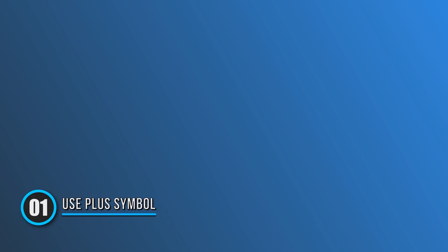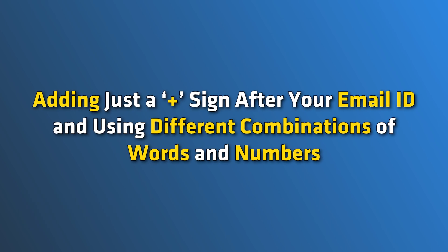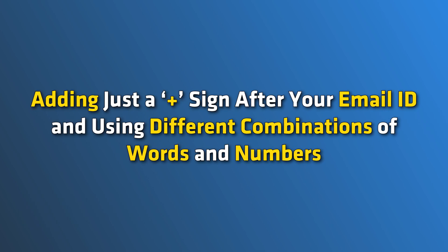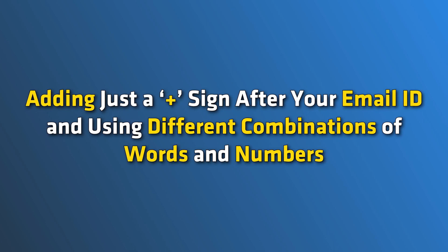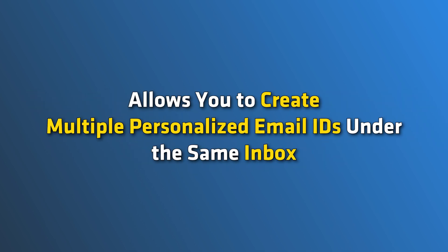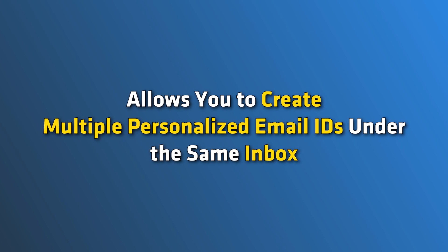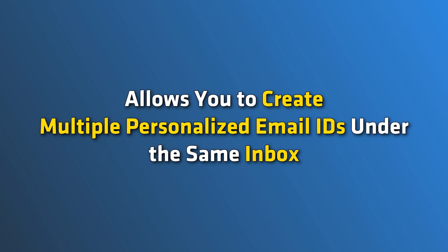Method 1: Using the plus symbol to create unlimited siblings of your Gmail address. Adding just a plus sign after your email ID and using different combinations of words and numbers allows you to create multiple personalized email IDs under the same inbox.